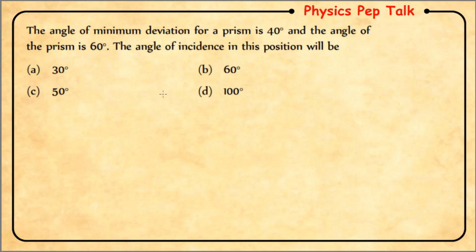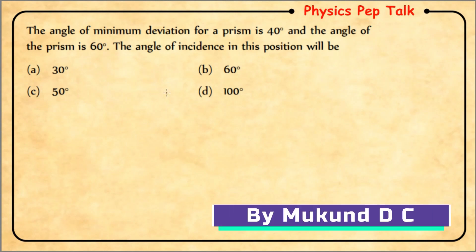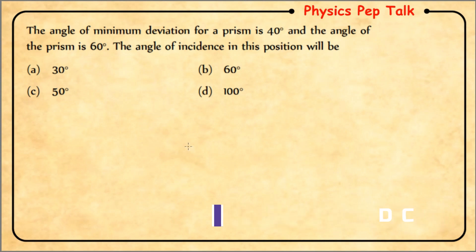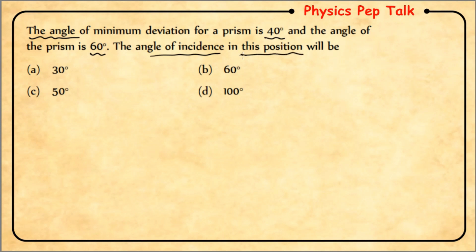Hello everyone, welcome to Physics Pep Talk. In this video I will be solving some more multiple-choice questions based on refraction at the prism and dispersion. First question: the angle of minimum deviation for a prism is 40 degrees and the angle of the prism is 60 degrees. The angle of incidence in this position will be?